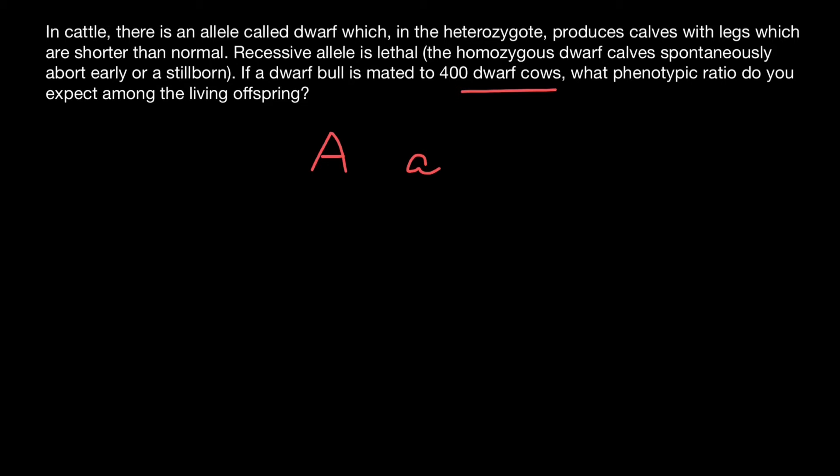So capital A, small a. If cows were going to be normal, their genotypes would be capital A, capital A, but because the cows are also dwarf, we know that all of them are heterozygous. Let's see what we are going to get: capital A, capital A here; capital A, small a here;